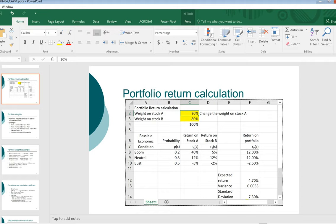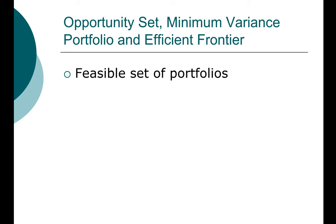Each portfolio we create has a different expected return and a different standard deviation. We call these sets of portfolios the feasible set of portfolios. 'Feasible' here simply means it is possible to create those portfolios. You can have a very large number of feasible portfolios — for example, 10.5% in stock A and 89.5% in stock B, or 10.6% in stock A, and so forth.